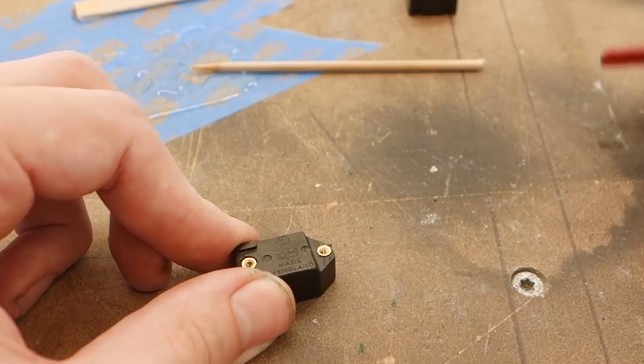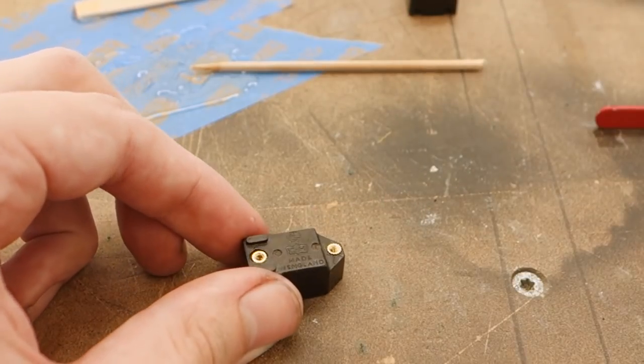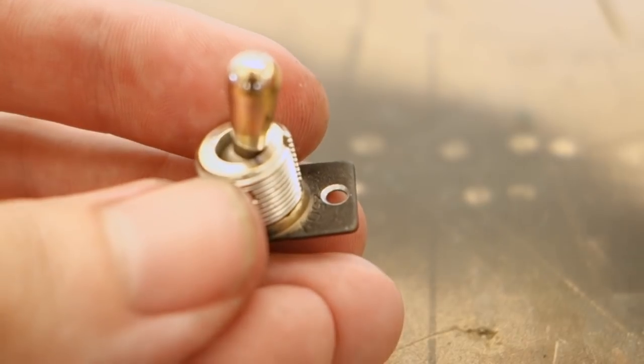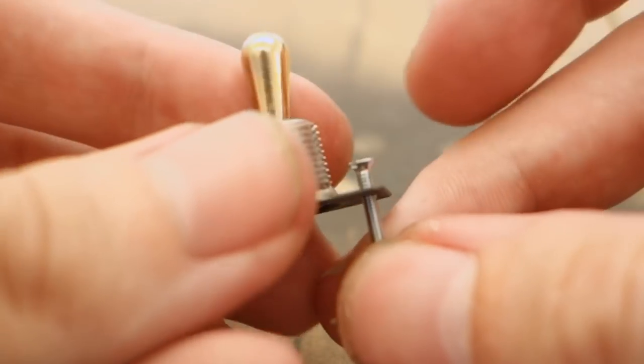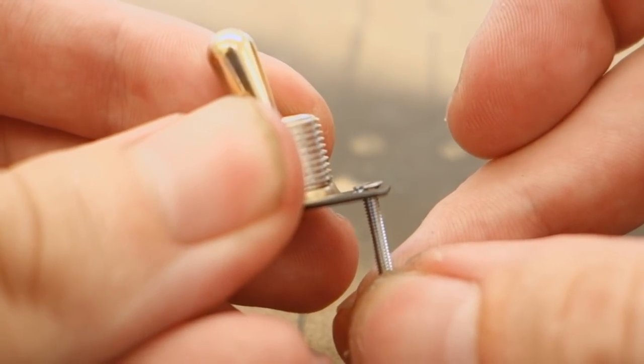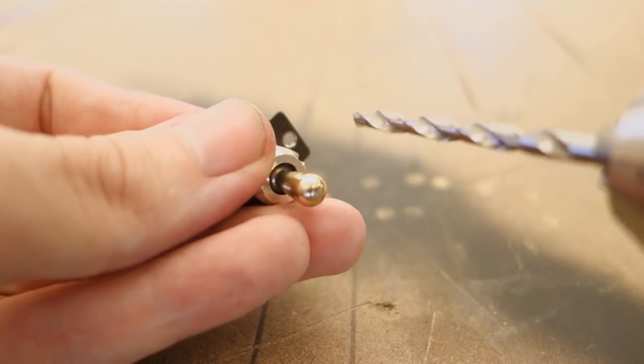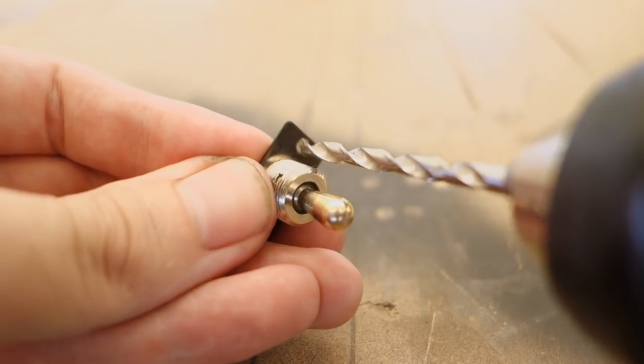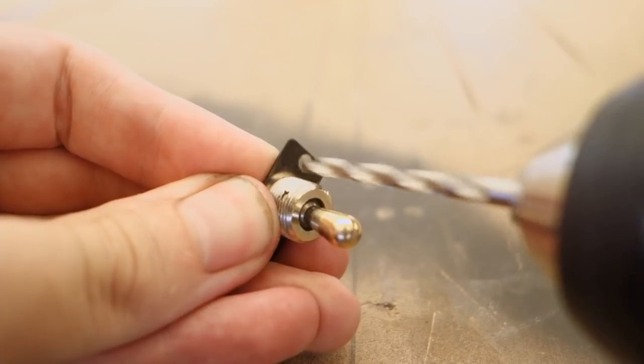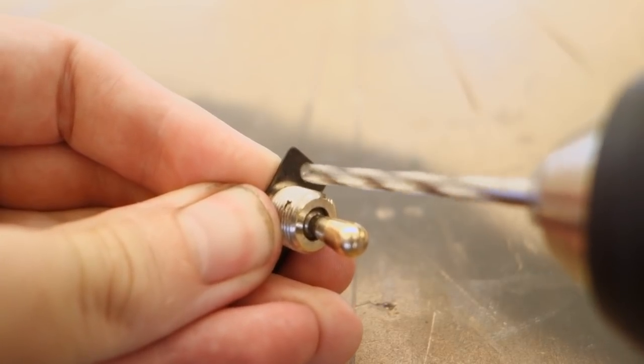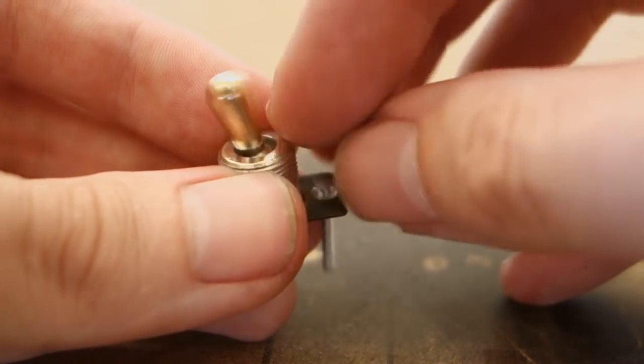While the glue cures we can turn our attention to the top plate of the switches. Since we want our screw heads to sit flush with the plate we need to countersink the holes slightly. Just use a drill bit and carefully create a countersink. As the material is thin you want to go slow and make sure you're not accidentally creating a hole that's too big for the screw.